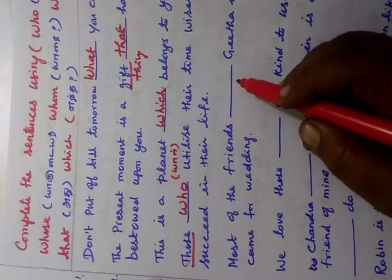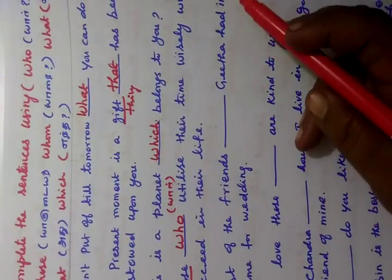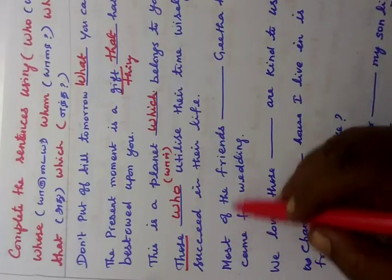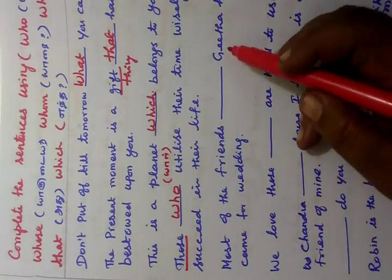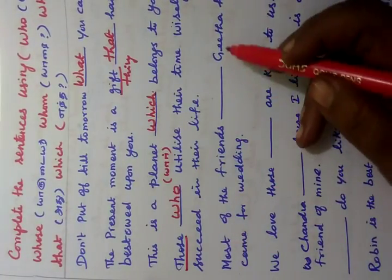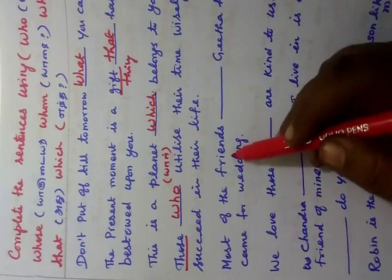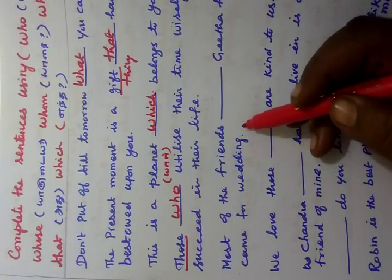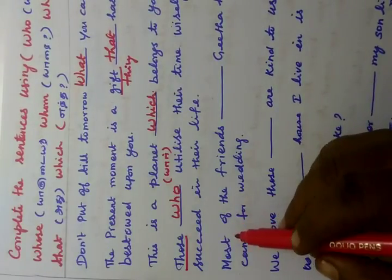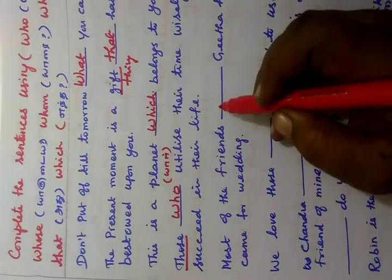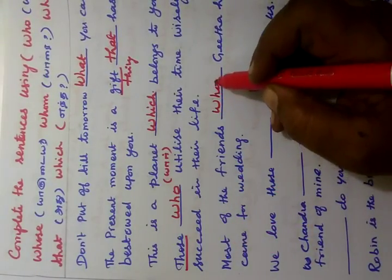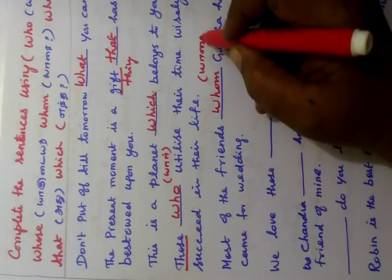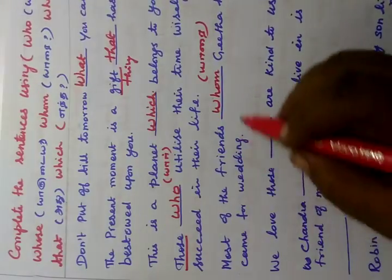Then, 'most of the friends whom Geetha had invited came for the wedding.' Most of the friends came for the wedding — so the answer is 'whom', since the friends were invited by Geetha.